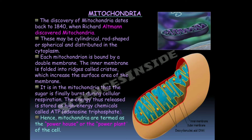The discovery of mitochondria dates back to 1840 when Richard Altman discovered them. They may be cylindrical, rod-shaped, or spherical and are distributed in the cytoplasm. Each mitochondrion is bound by a double membrane; the inner membrane is folded into ridges called cristae, which increase the surface area. It is in the mitochondria that sugar is burned during cellular respiration, and the energy released is stored as ATP — adenosine triphosphate. Hence they are called the powerhouse or power plant of the cell.